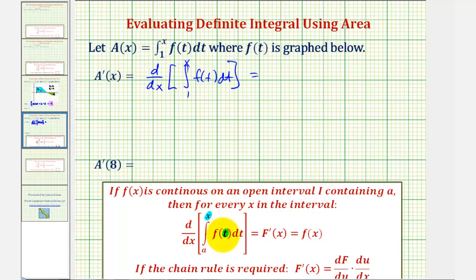we can substitute x for t, giving us f of x. So, applying this to find a prime of x, again, we'll substitute x for t, giving us f of x. So, if a prime of x equals f of x, then a prime of eight is equal to f of eight.